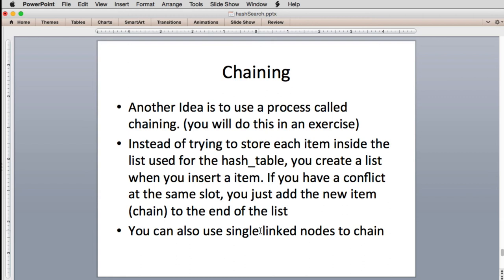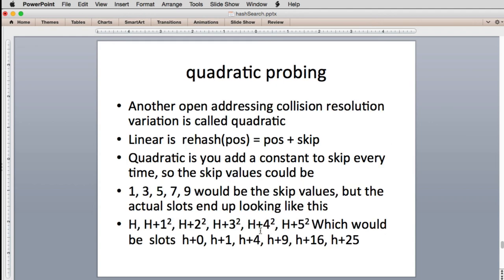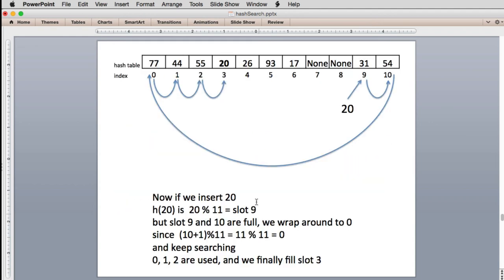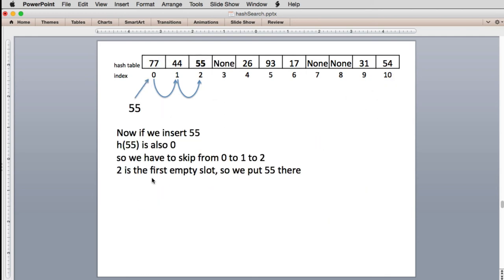So each point in the table, let me get a picture of the original table. Each point in the table, instead of a number would point to a linked list. This would be the head of a linked list. So that's how you would use it using a linked list.